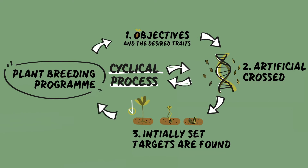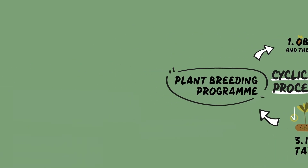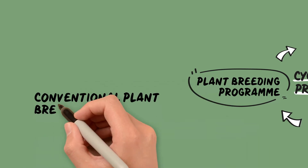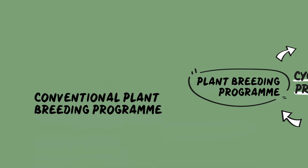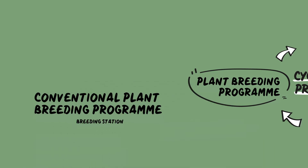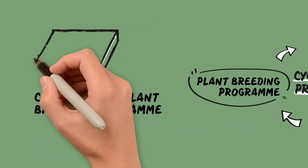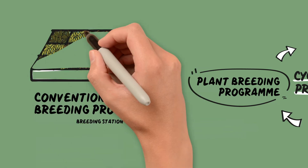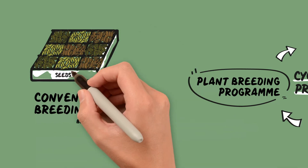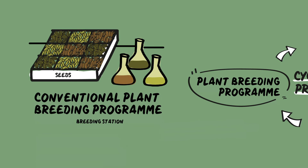In a conventional plant breeding program, these steps are carried out by researchers in a breeding station. Farmers are not actually involved, apart from hosting the final field trials before the new varieties are released commercially.